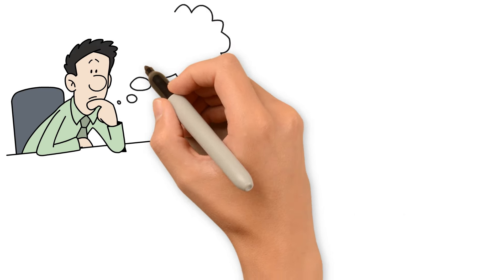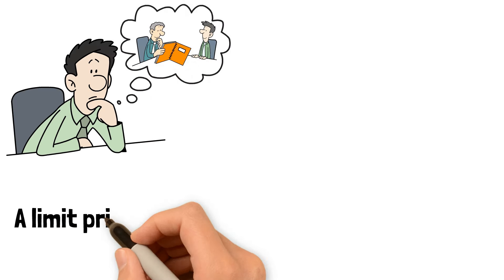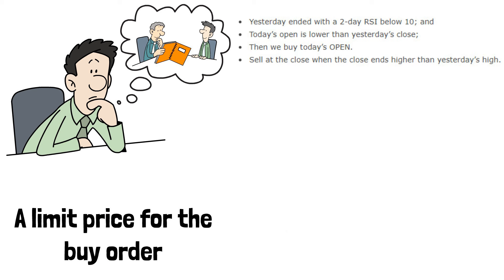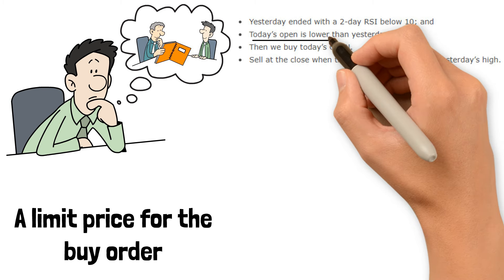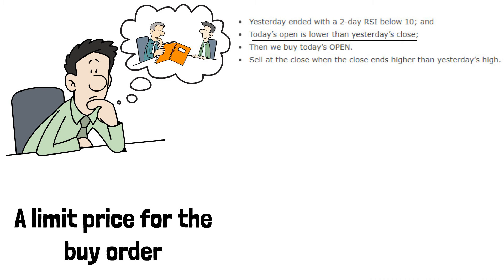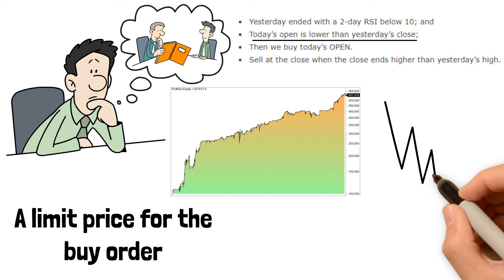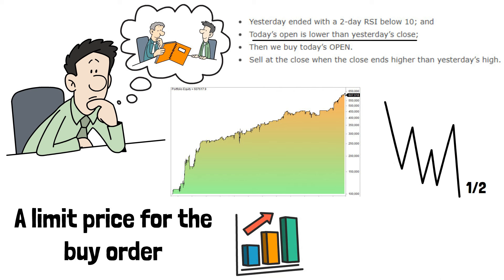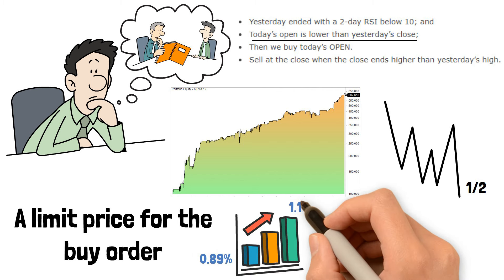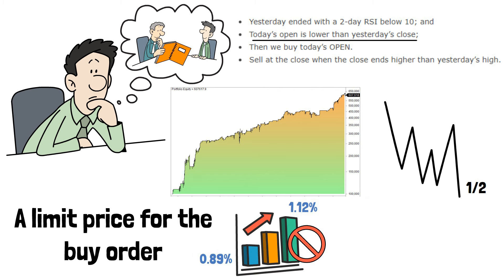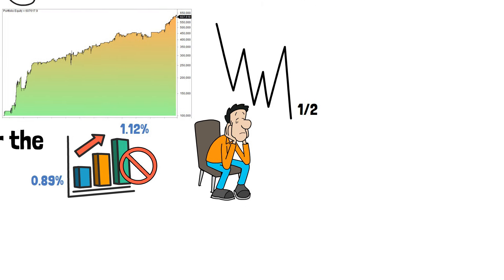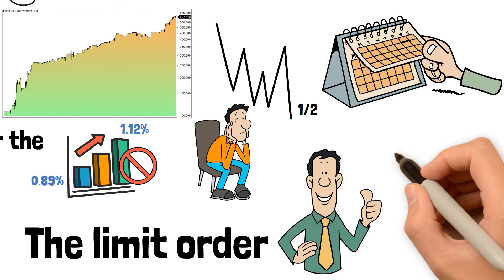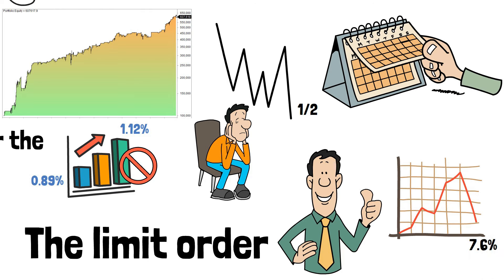With that in mind, let's use the same strategy but use a limit price for the buy order. We change the trading rules to buy the day after the signal, if today's open is lower than yesterday's close. As expected, the number of trades dropped significantly — more than half. The average gain per trade goes up from 0.89% to 1.12%, but this is not enough to offset the lost profits because of the limit order and entering the next day. Annual returns drop to 7.6% from 10.4%.